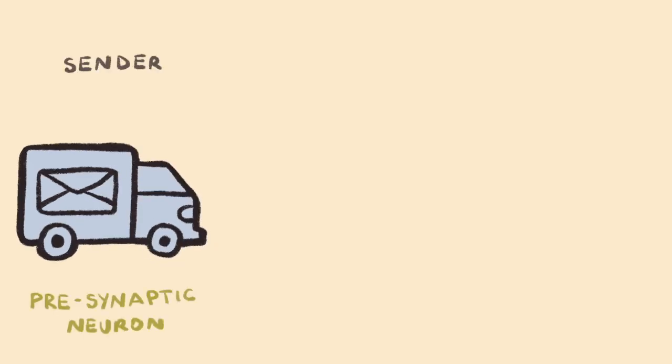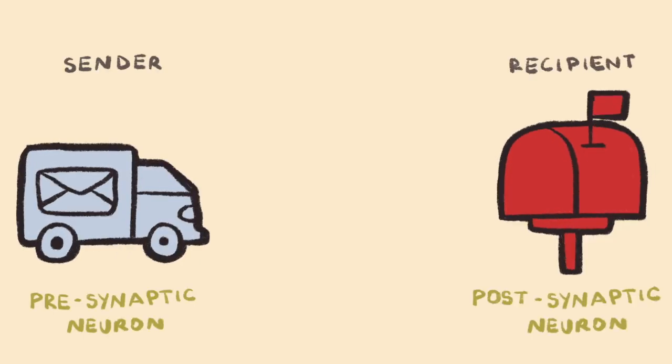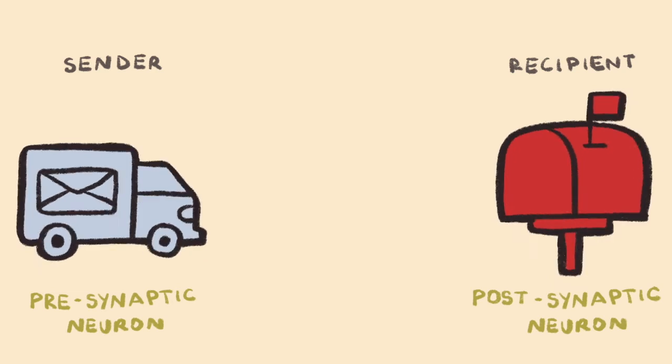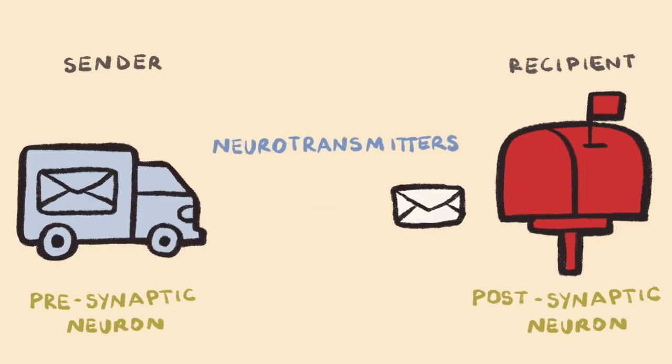You can think of neurotransmitters as pieces of mail being transferred via the postal service, going from a sender, or presynaptic neuron, to a recipient, or postsynaptic neuron, muscle, or gland.